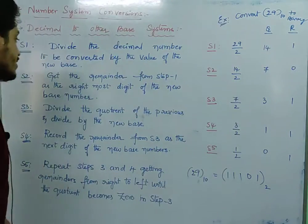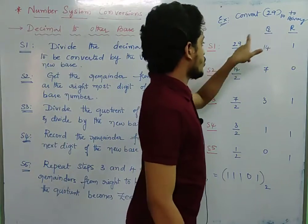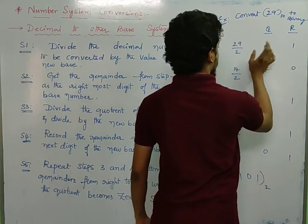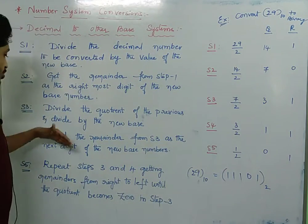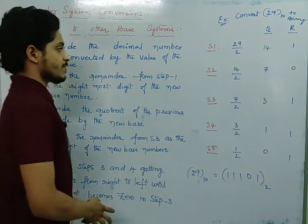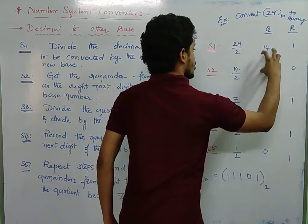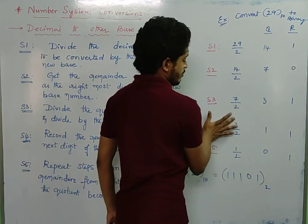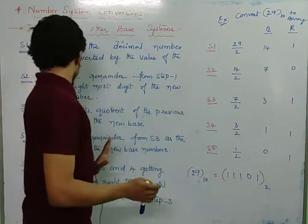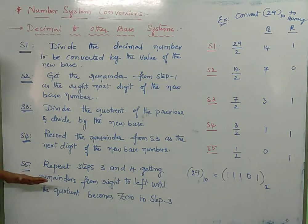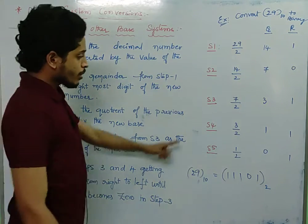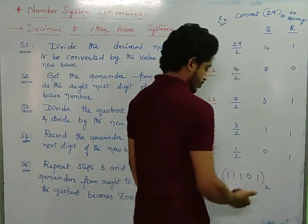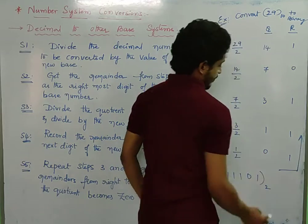In the binary number system, we divide the number 29 by 2. The quotient and the remainder — divide 29 by 2, the remainder is 1. Then divide the quotient of the previous step by the new base again. Repeat this process, recording each remainder from right to left until the quotient becomes 0.